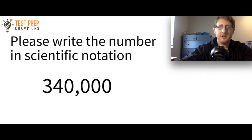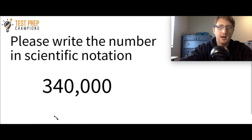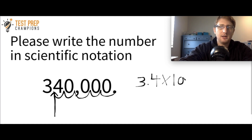Here's another example. I'm going to approach this the same way — I want to end up with my decimal point between the first two digits, so between the three and the four. Right now my decimal point is after the last zero, so I'm going to move it to the left and count the moves: 1, 2, 3, 4, 5. So in scientific notation, I'm going to write 3.4 times 10 to the fifth.